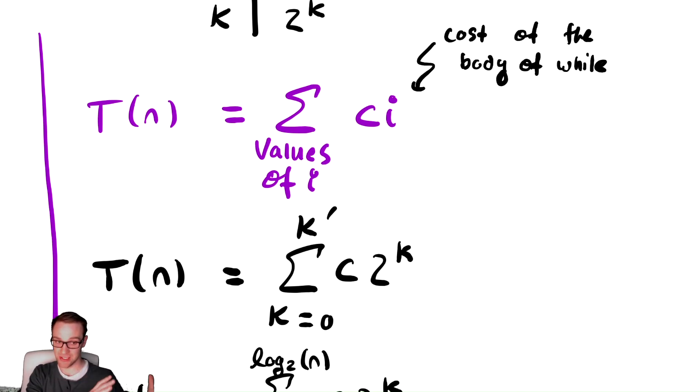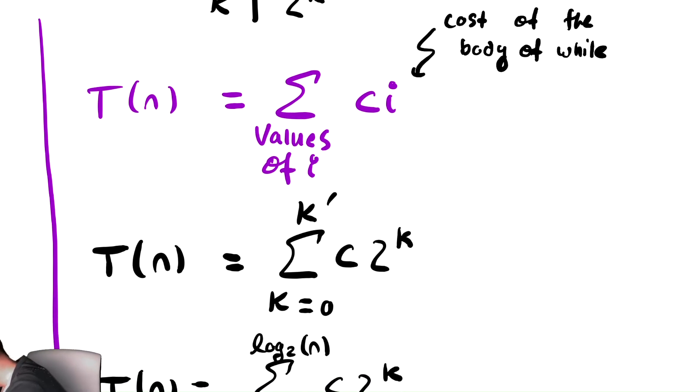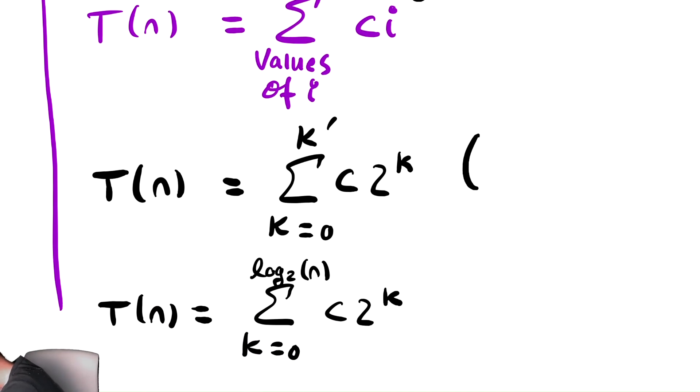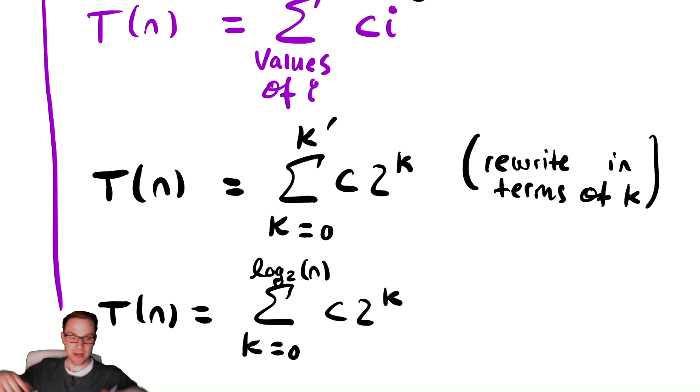So we take the cost of the body and add it up over all the values of i, then recontextualize that in terms of k. So we rewrite the sum in terms of k. And then we are in our previous unit where we were analyzing for loops and using summations. It's the exact same thing now. I could have written a for loop that had this exact summation as its running time, and therefore we are now firmly in quote unquote comfortable territory.